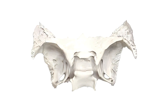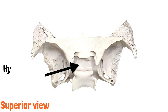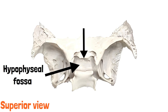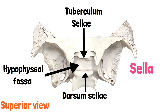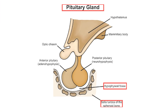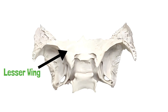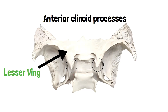Let's have a look at these parts. This is the superior view of the bone. This deep part is the hypophysial fossa, where the pituitary gland is situated. This is the tuberculum sellae, which forms the anterior wall of the sella turcica. This is the dorsum sellae, which forms the posterior wall of the sella turcica. This is how the pituitary gland is situated in the sella turcica. This is the lesser wing, and from the lesser wings the anterior clinoid processes arise. The superolateral projections of the dorsum sellae are the posterior clinoid processes.